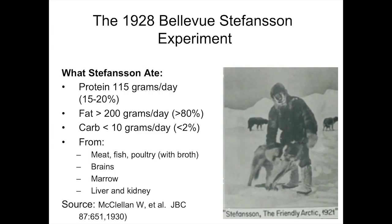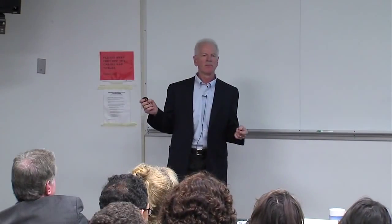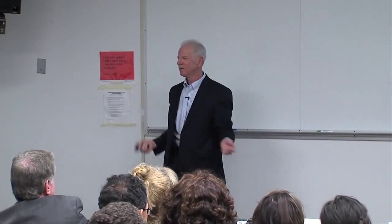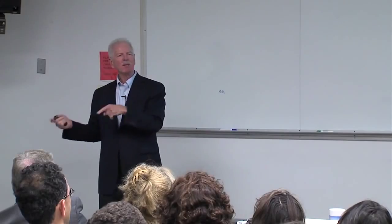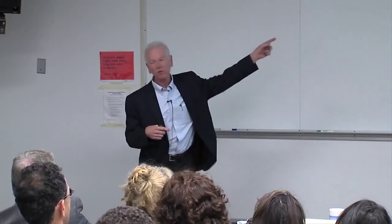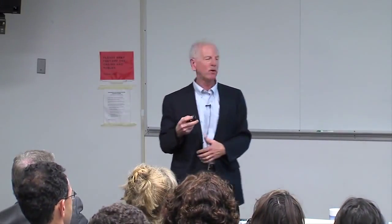People assumed the Inuit ate high-protein diets, but Stefansson ate what kept him healthy in the Arctic. He ate 115 grams of protein — about 15–20% of daily energy — over 200 grams a day of fat, and less than 10 grams of carbohydrate, most of which came from glycogen in the meat itself. He ate a whole range of foods: meat, fish, poultry, brains, marrow, liver, kidney, and other organ meats. Importantly, a lot of the meat he ate was boiled and he drank the broth — which in retrospect was necessary for potassium. When you boil a piece of meat for half an hour, half the potassium comes out in the broth. These people figured it out long before Lavoisier taught us chemistry.